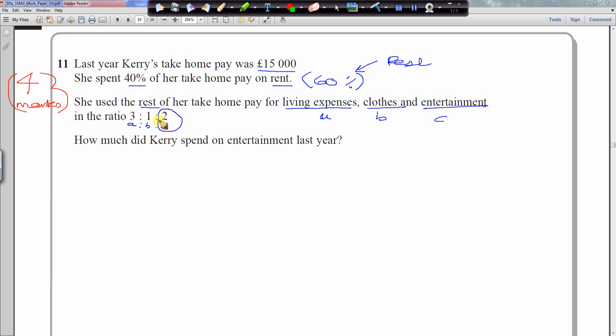So let's quickly work out how much she had left over. She spent 40% of her take-home pay on rent, and the rest is spent in this ratio. So let's work out what that 60% actually is first. 60% of $15,000.